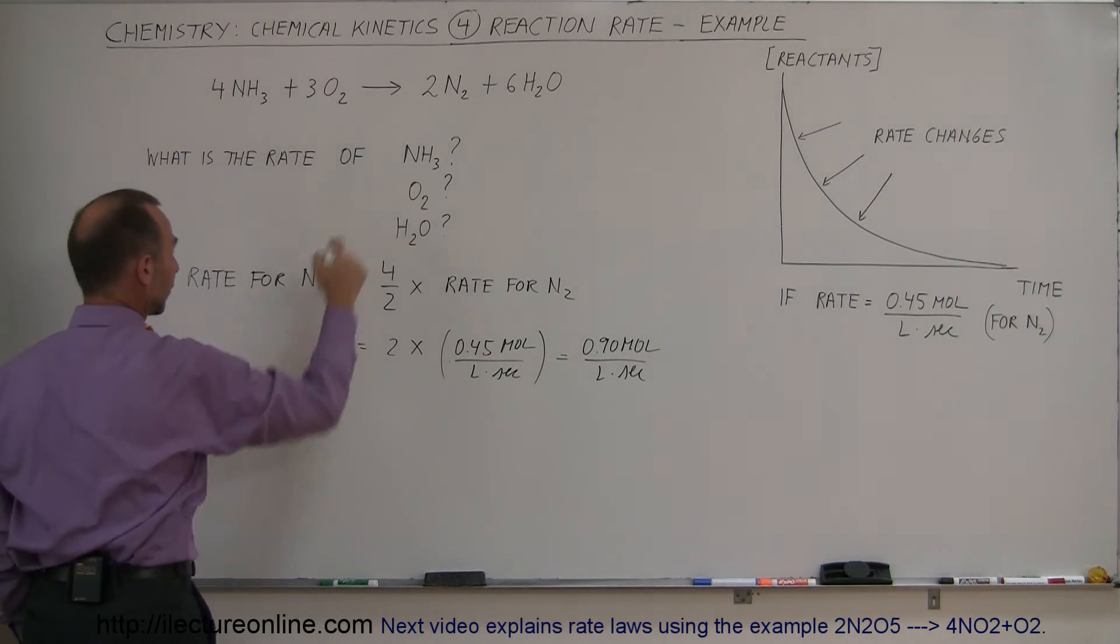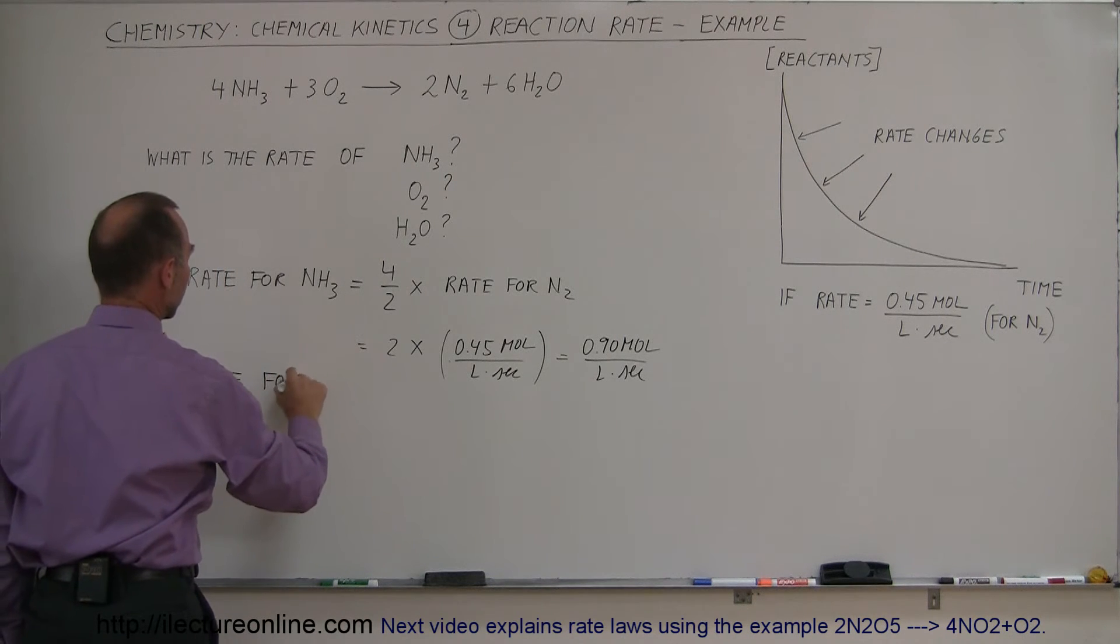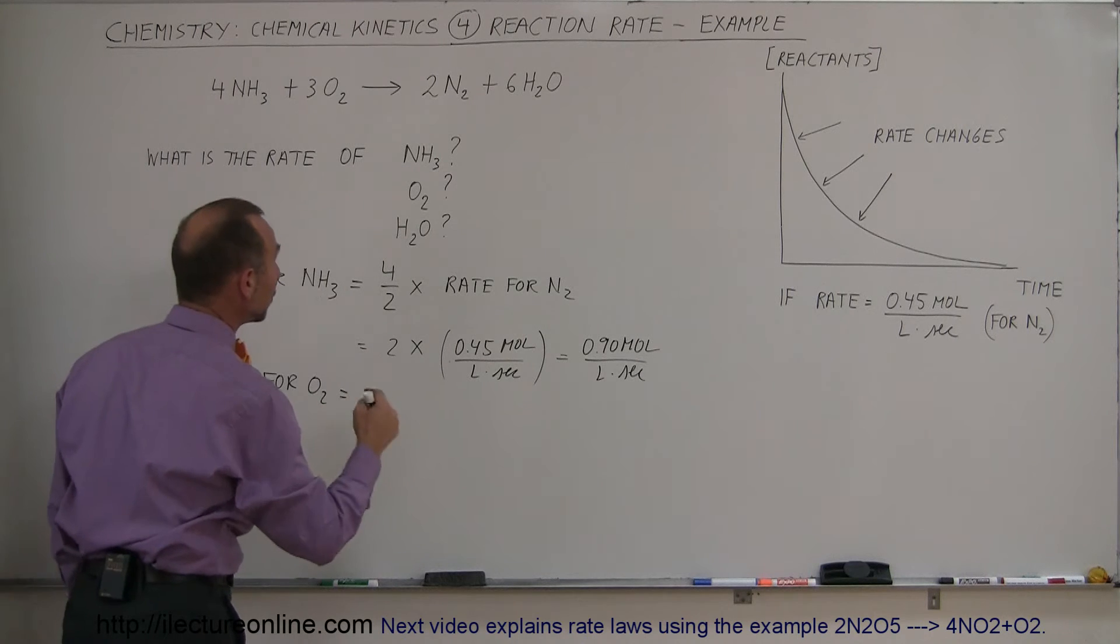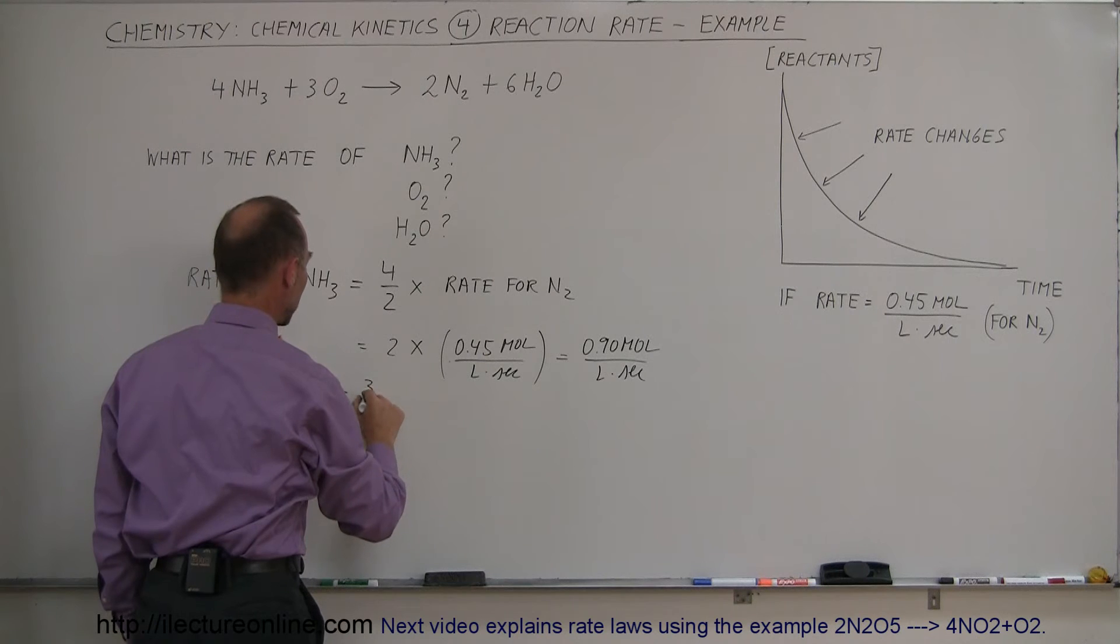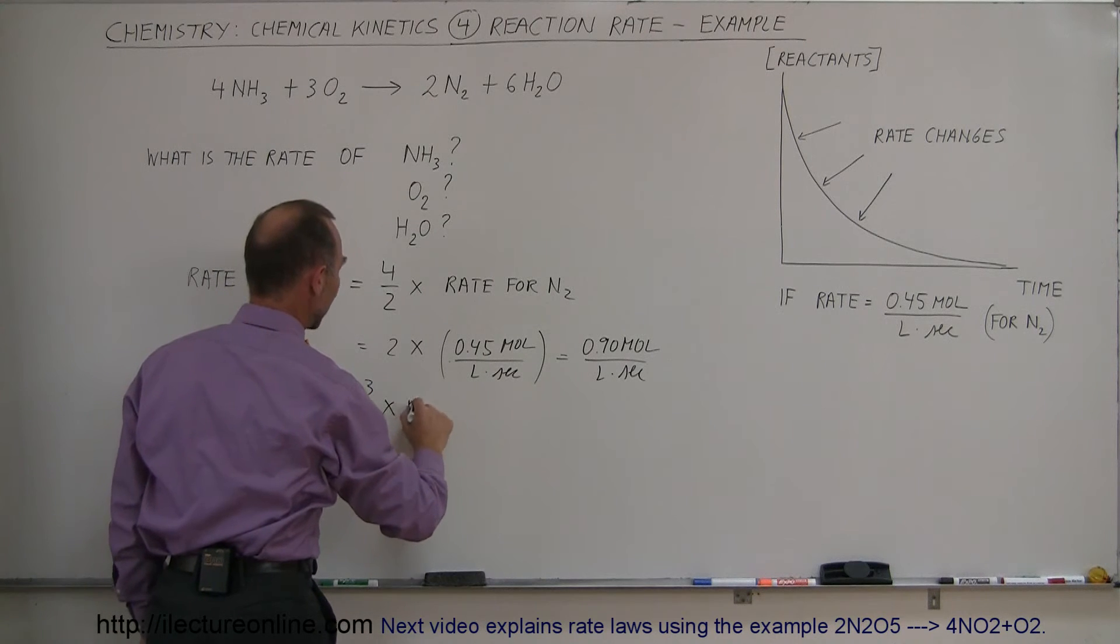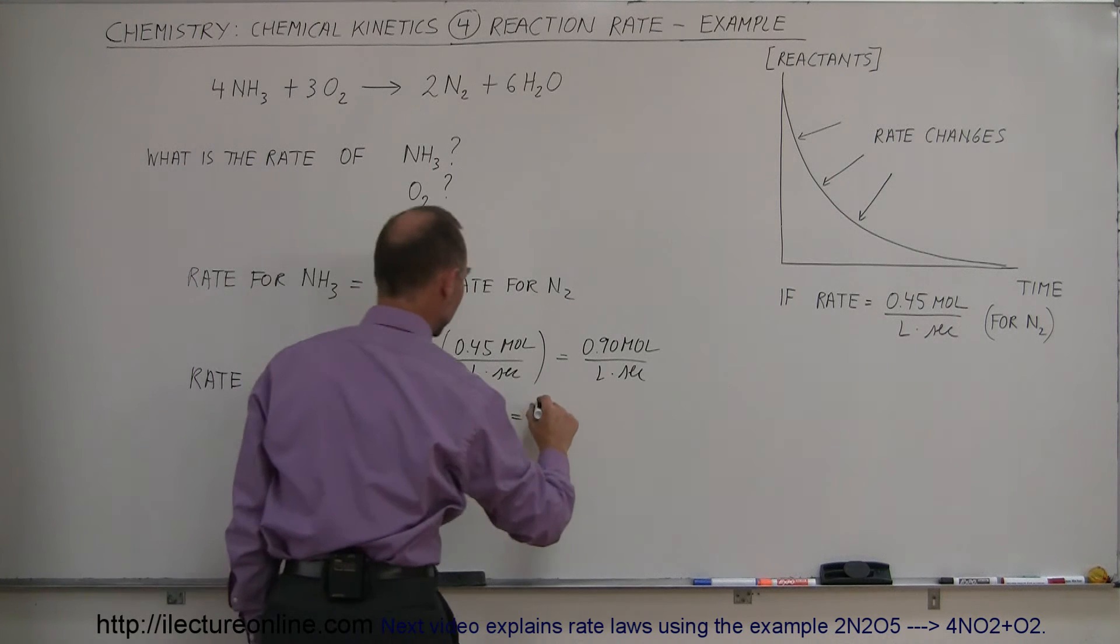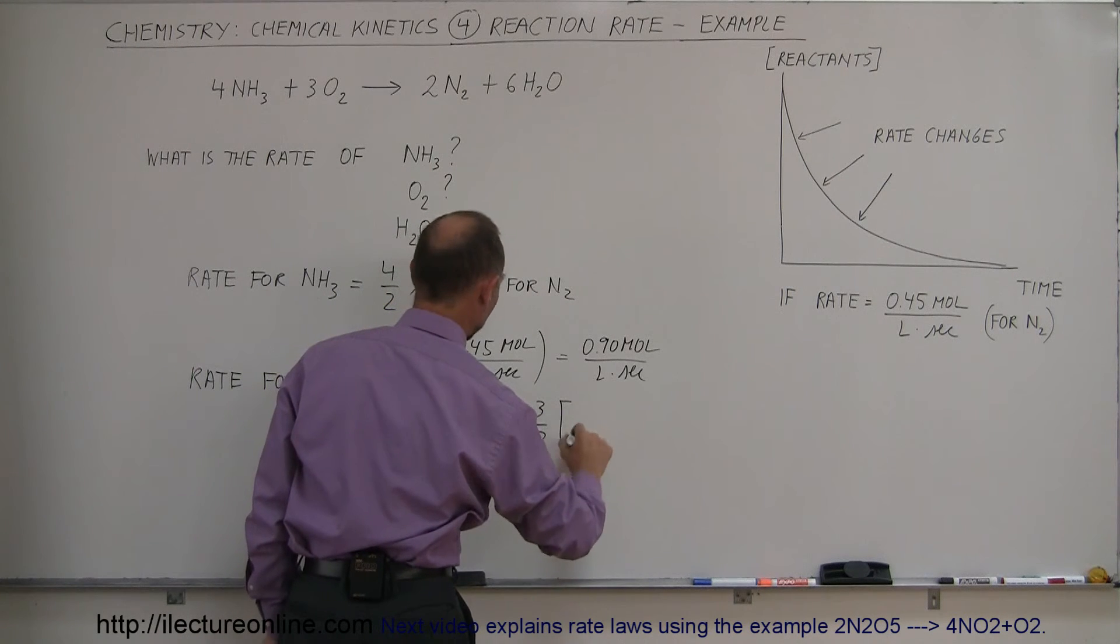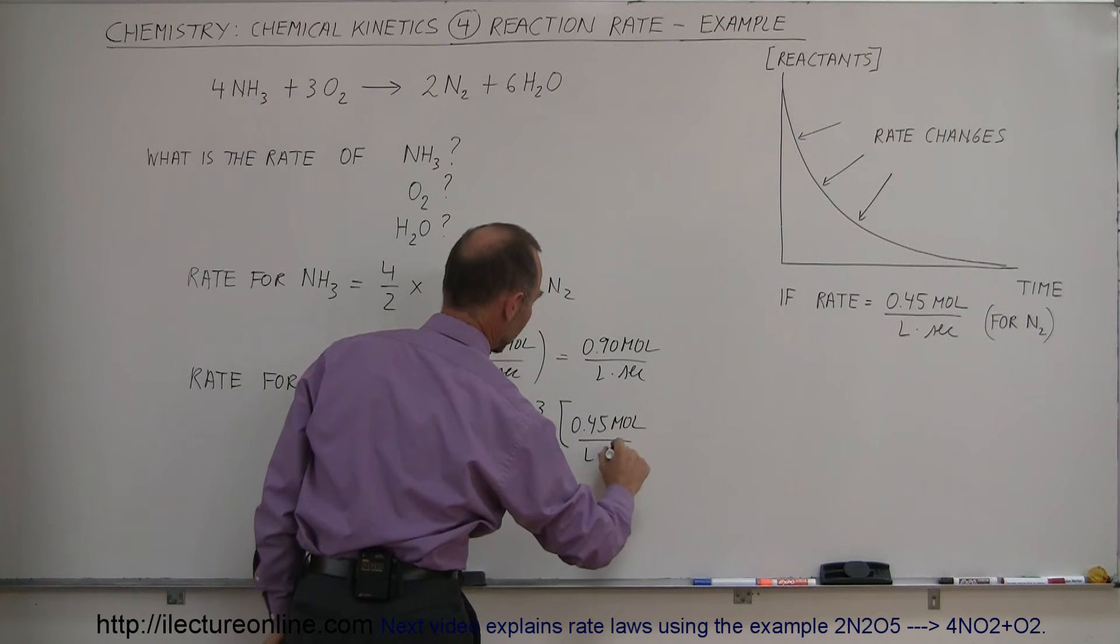Okay, now we want to know the rate for oxygen gas. So the rate for the oxygen gas is equal to, again we use the ratio, we need 3 moles of this to produce 2 moles of that. So it's going to be 3 over 2 times the rate of the nitrogen gas. So in this case, it's going to be equal to 3 over 2 times 0.45 moles per liter times seconds.